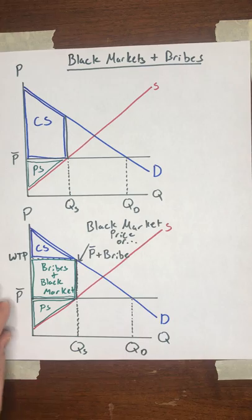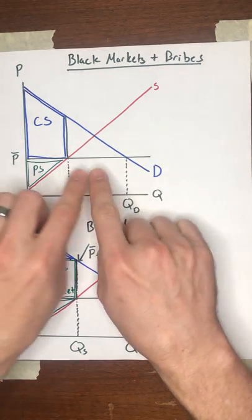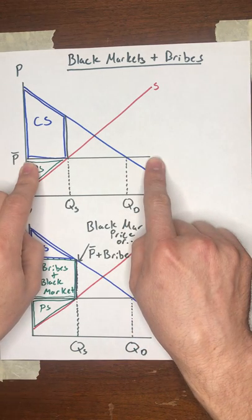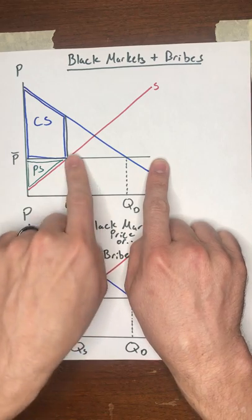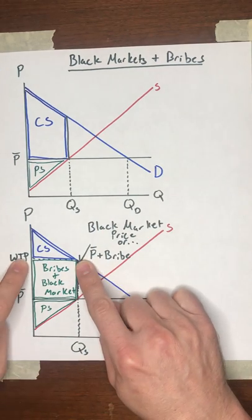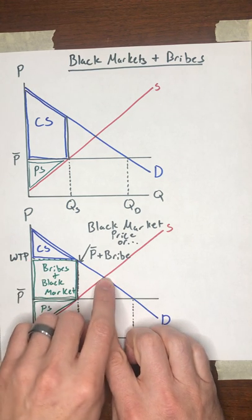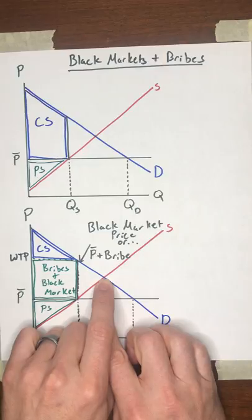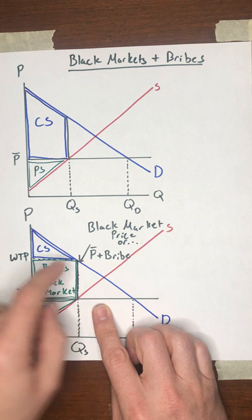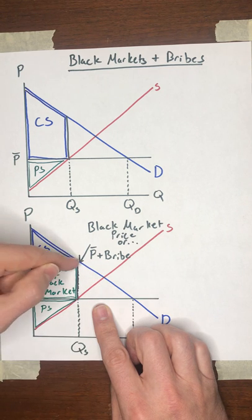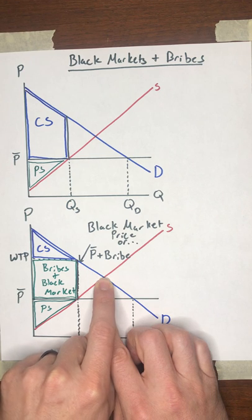Now note the irony here. The government sets up a regime where they're trying to make the prices lower to the consumers, but in doing that, it's possible that the shortage they create actually ends up in a situation where the buyers are paying a higher price than they would have. Notice that the equilibrium price is down here, but once you factor in the bribes that are getting paid and the black market prices, the final price to the buyers can actually be higher than it would have been in equilibrium, which is kind of a bitter irony.